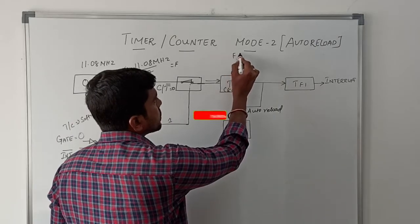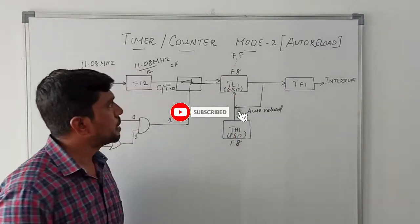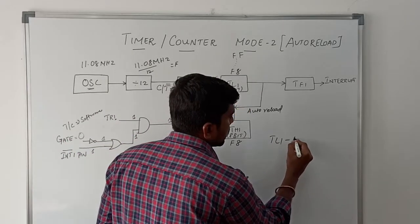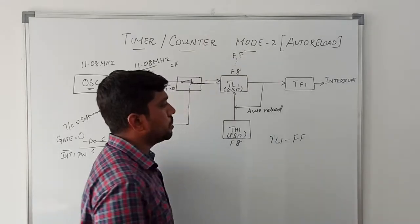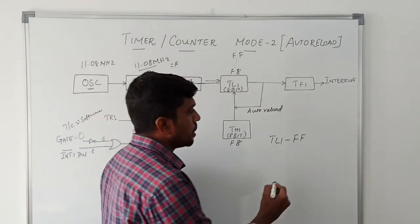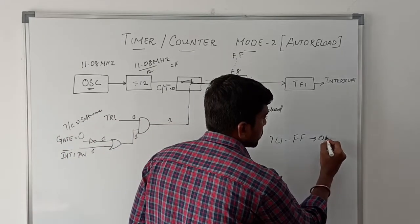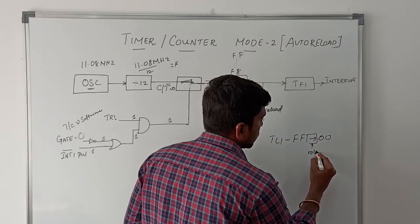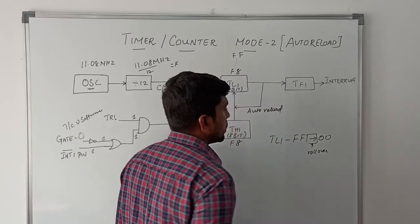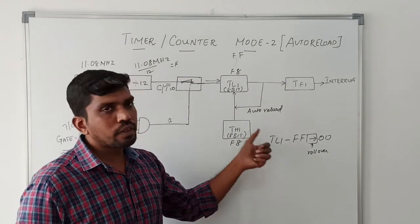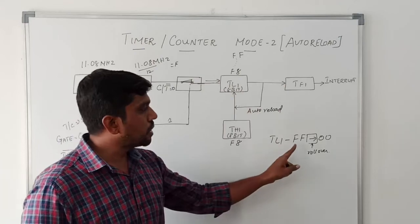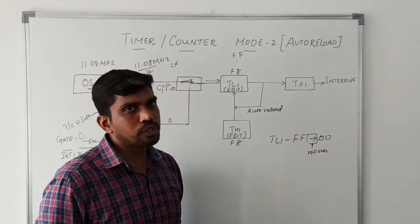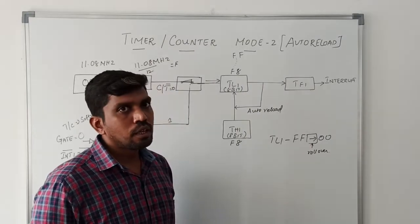Finally, it reaches the maximum limit FF. Once the TL1 register reaches the maximum value FF, all the bits are set to 1. It is transferred to 00. This condition is called a rollover. Once it reaches the maximum value, after entering the next clock pulse, all 1s change to all 0s. This condition is called a rollover. When rollover occurs, the signal is forced to the TF1 register.